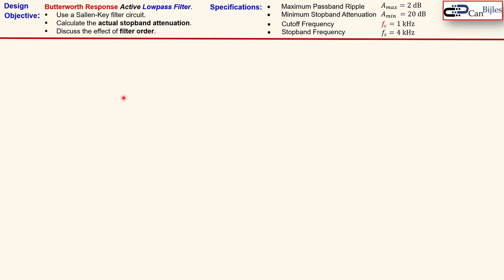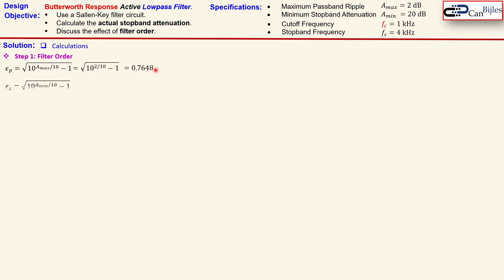Let's now look at our solutions. Step one is to calculate the filter order. For that you need to relate A_max to epsilon_p first. Substituting 2 dB into the formula gives 0.7648. A_min is similarly related to epsilon_s — substituting 20 dB gives 9.9499. Taking these together,